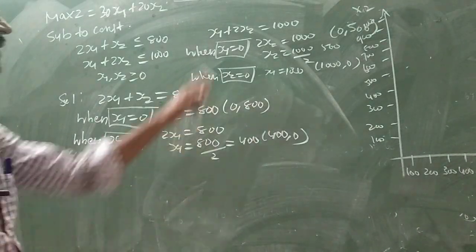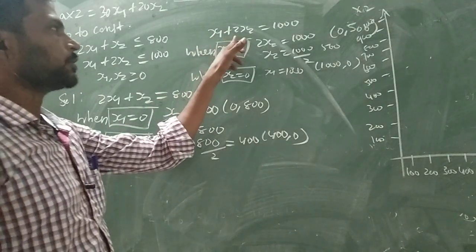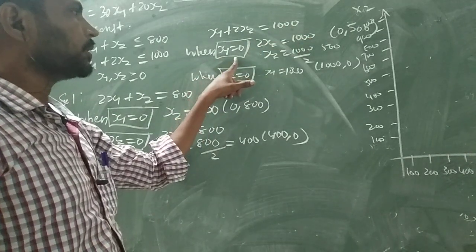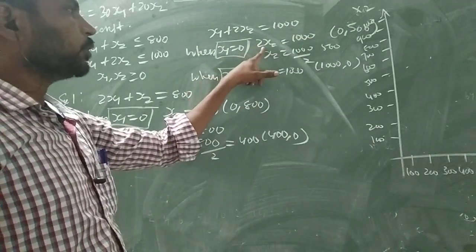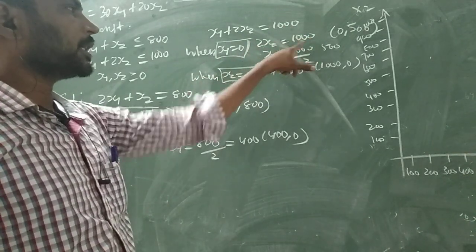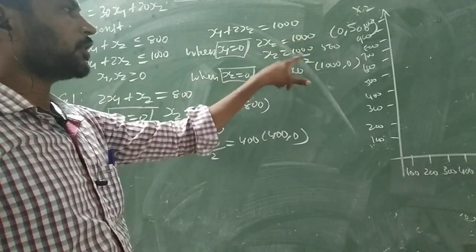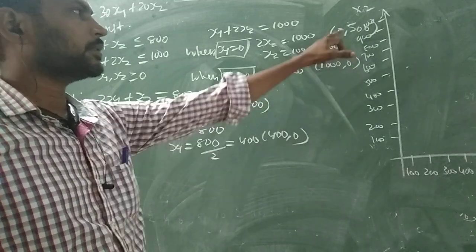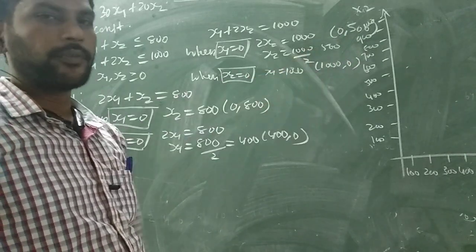And the second equation: x1 plus 2x2 equal to 1000. When x1 equal to 0, 2x2 equal to 1000, x2 equal to 500. So point is (0, 500).